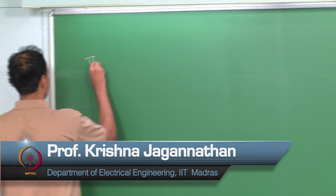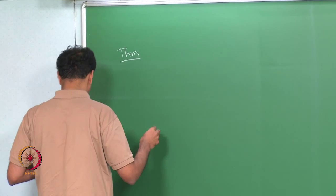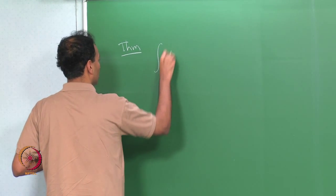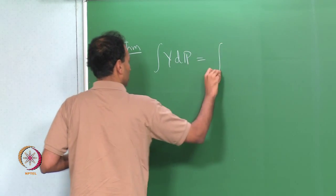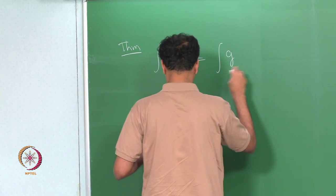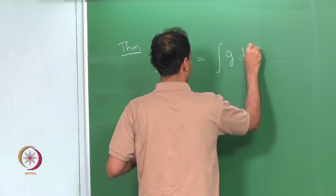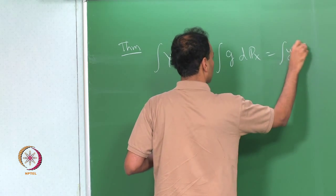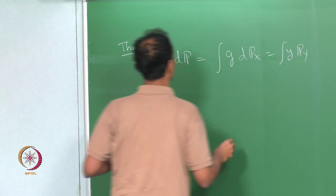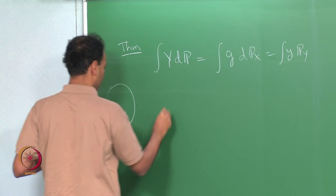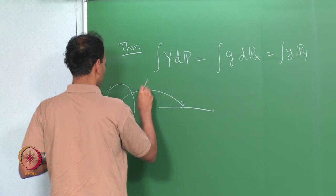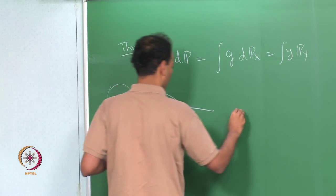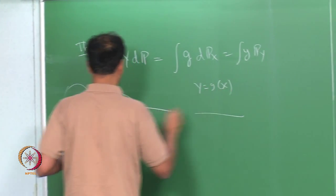We were discussing expectations on different spaces. I partially proved this theorem. So, we have omega x and y equals g of x.